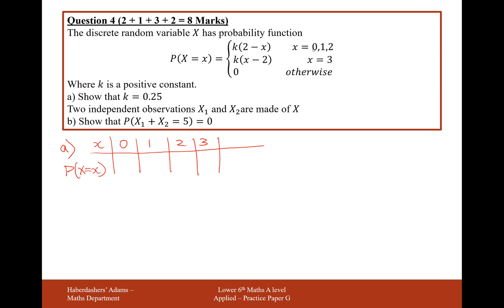When x equals 0, we get 2 minus 0, which is 2, times by k. So the probability of getting a 0 is 2k. Substituting in 1, we get 2 minus 1 which is 1, times by k, so we get k. Substituting 2, we get 2 minus 2 which is 0. Now x equals 3, so it's 3 minus 2 which is 1 times by k, so we get k here.